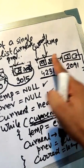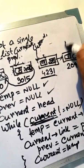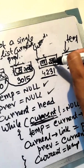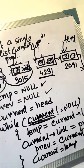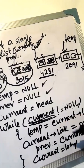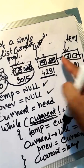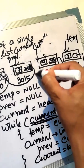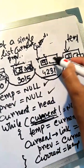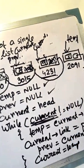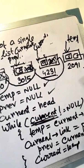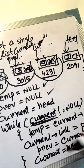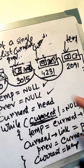We update the current pointer link. The current pointer link is 2091. The current pointer link will point to previous. We break the link and previous is now equal to 3015. We put the reverse address in the previous link.